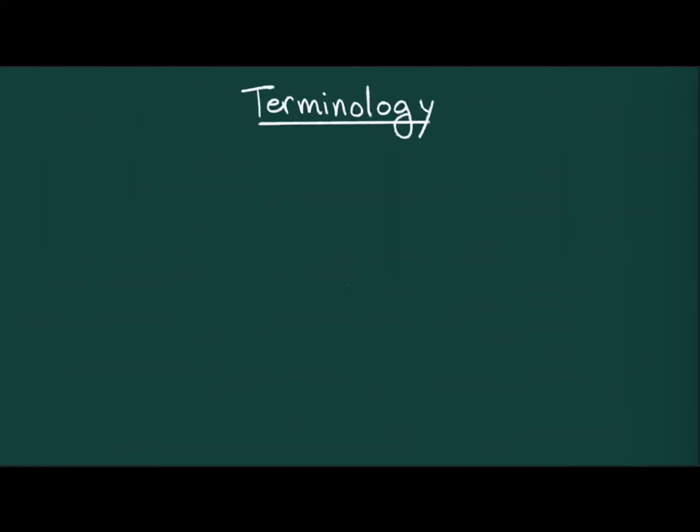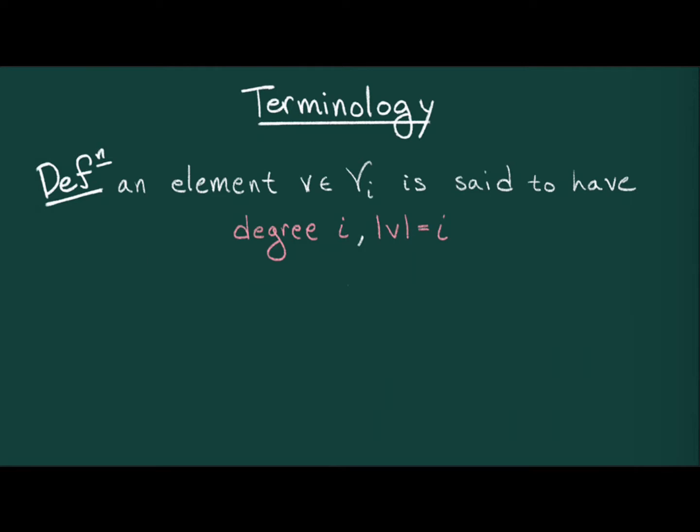A few pieces of terminology that may or may not expedite the upcoming discussion. First, an element in v_i is said to have degree i, which we'll abbreviate as deg(v) = i. Personally, I like to imagine that the degree is the mathematician's dimensional analysis. Like dimensional analysis, degree arguments are unreasonably effective. Second, a cycle of degree i is an element of v_i so that the boundary of v equals zero.